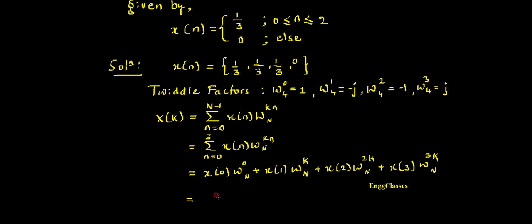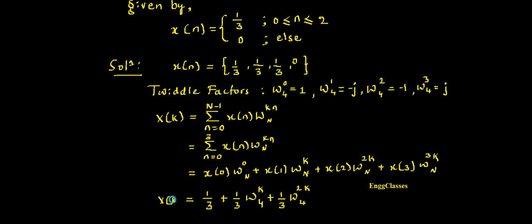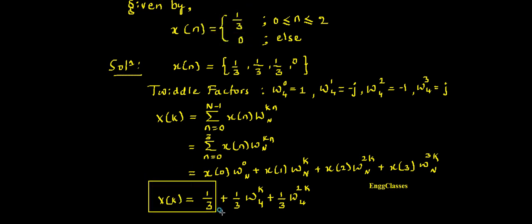Now let me place the values. x(0) is 1/3 and W4^0 is 1, plus x(1) is 1/3 times W4^k (capital N is 4), plus x(2) is 1/3 times W4^(2k), plus x(3) is 0. So this is the expression for X(k) — I'll call this equation number 1.